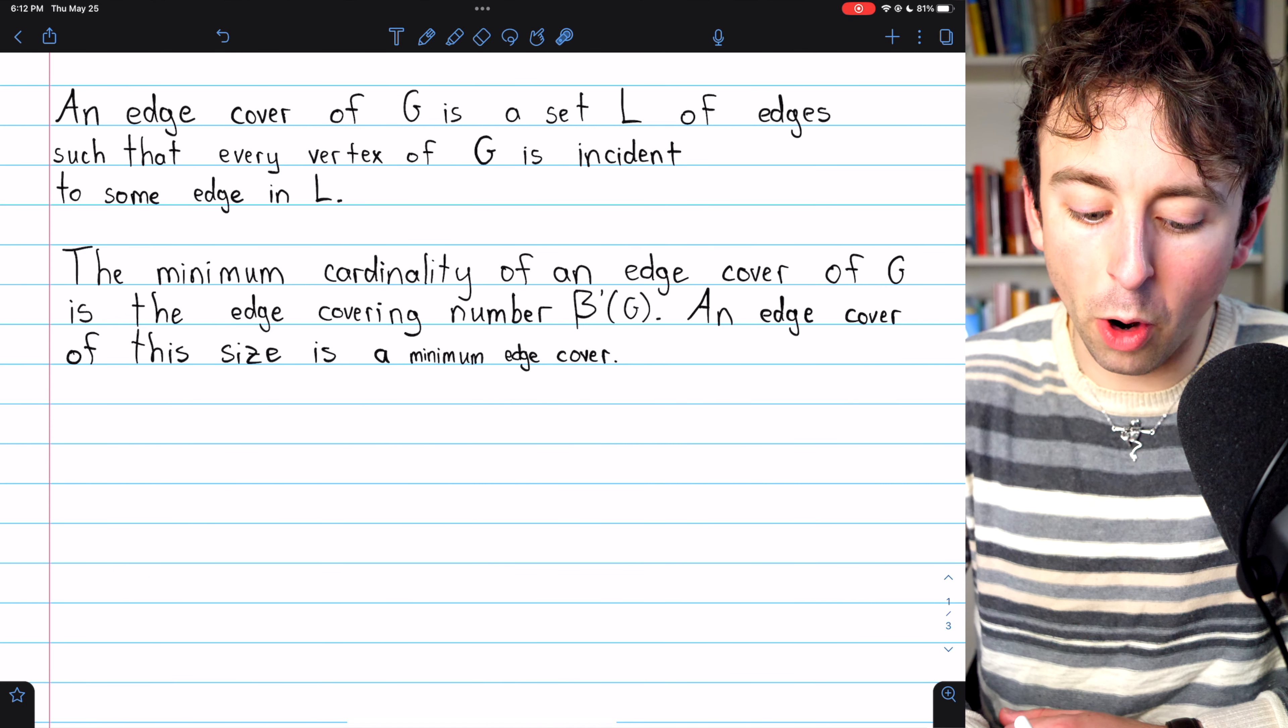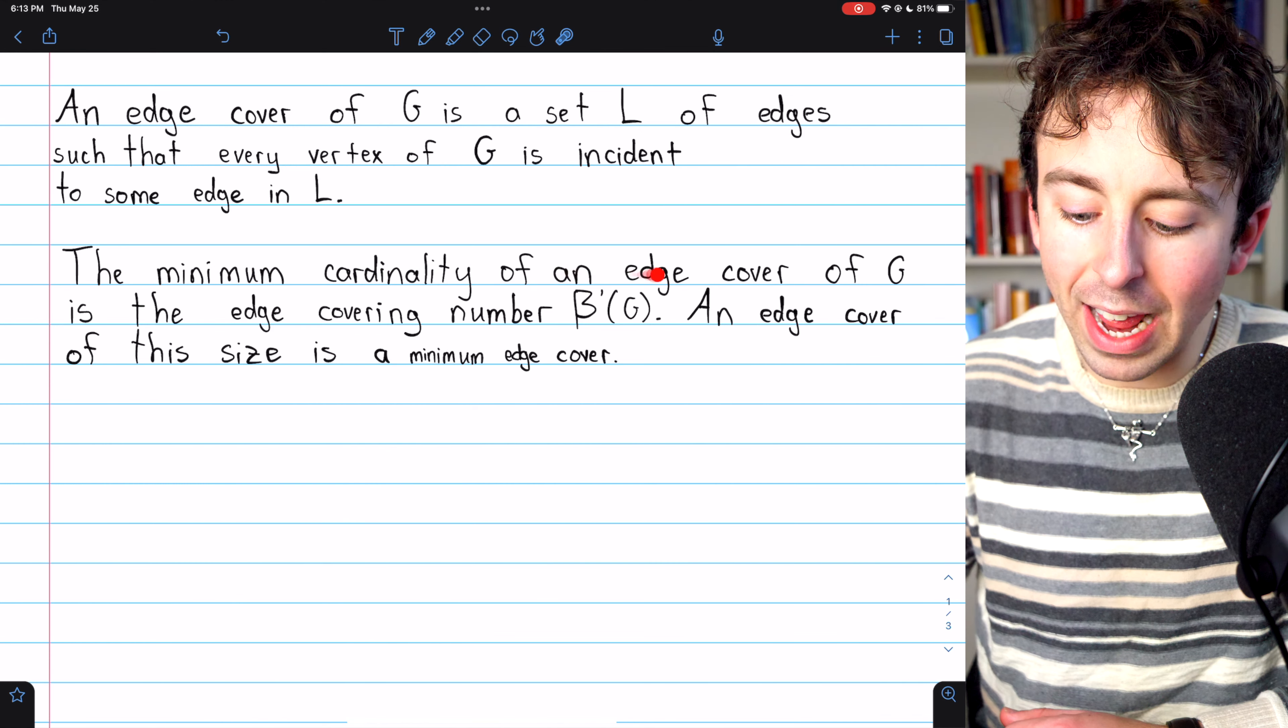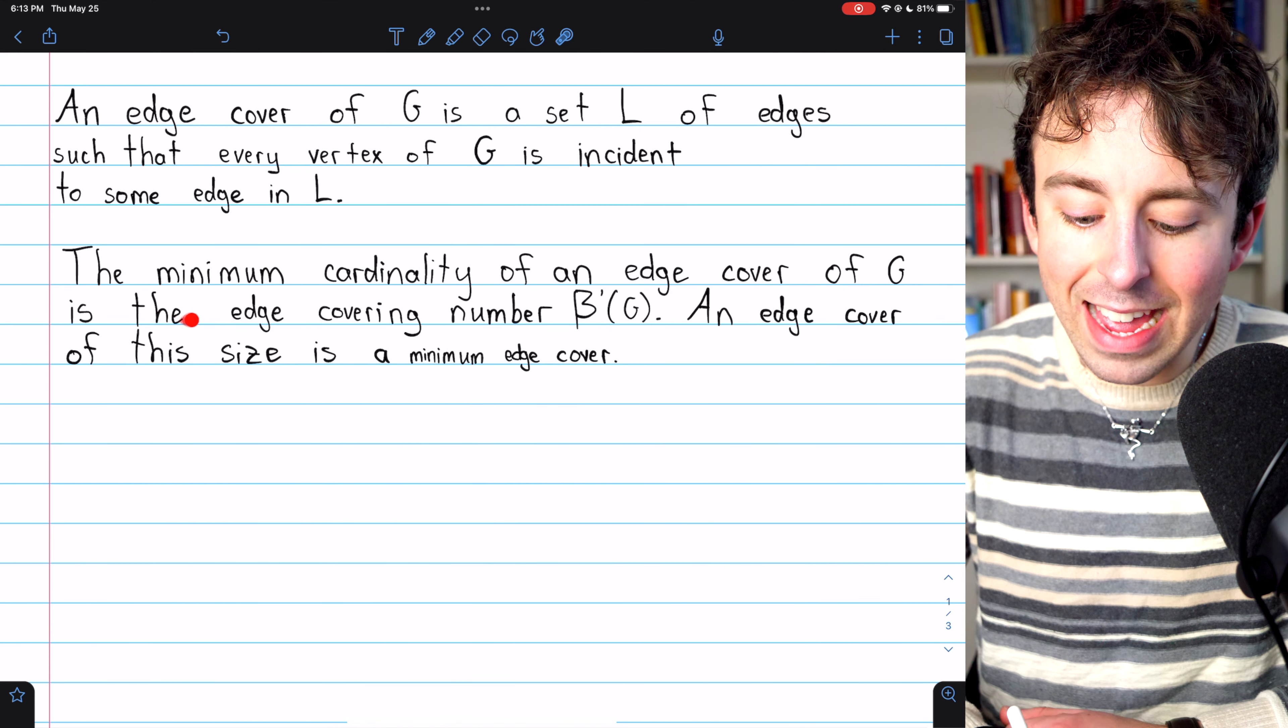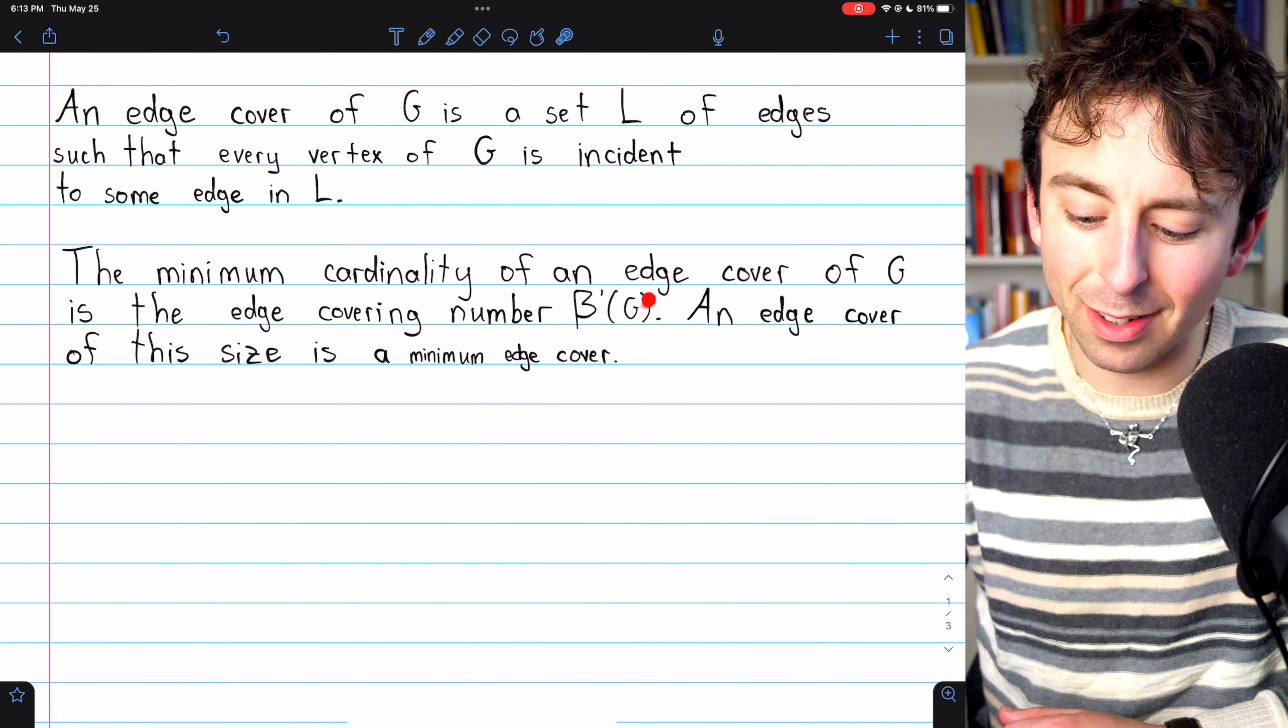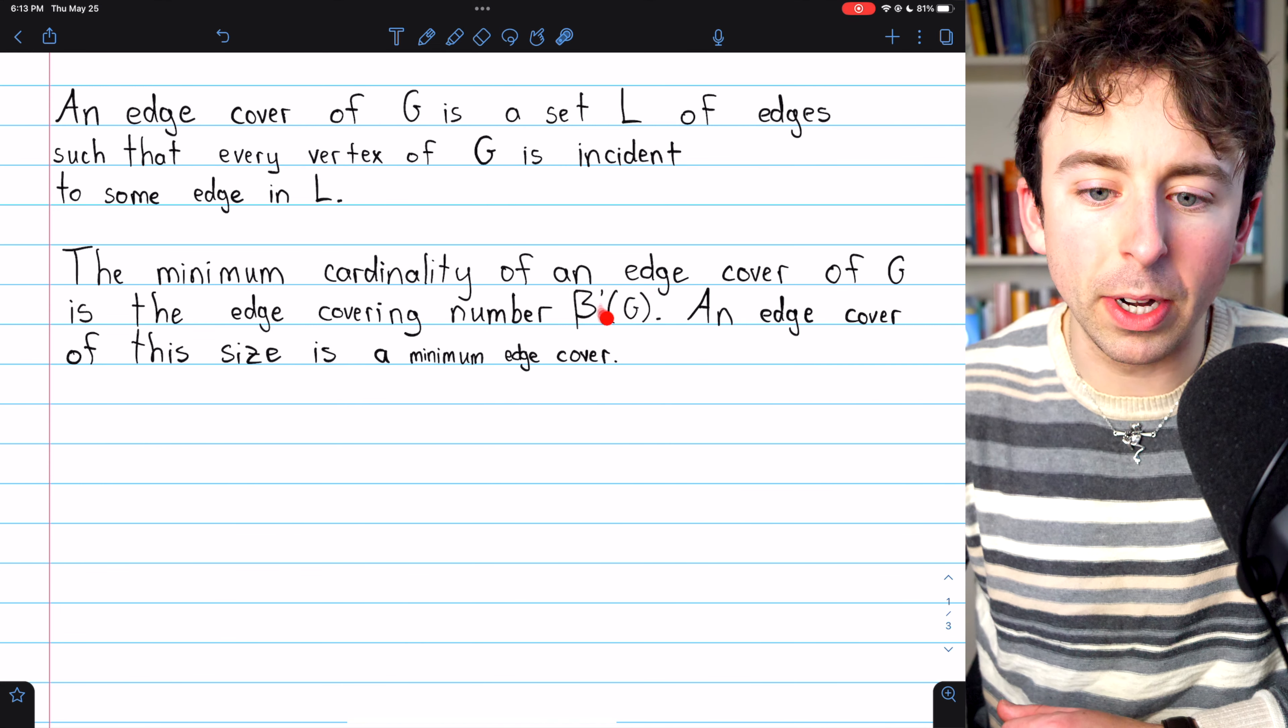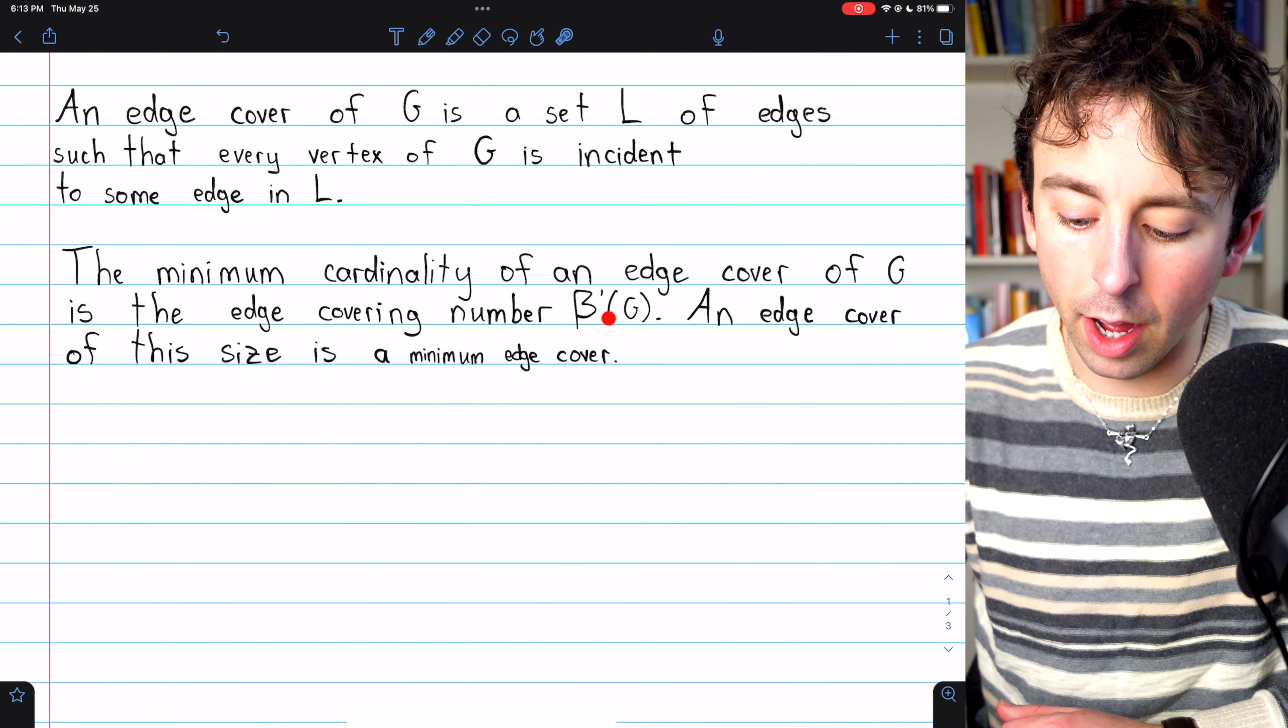Here's a little bit more vocab. The minimum cardinality of an edge cover of G is the edge covering number of the graph, and it's denoted sometimes like this. Not always, but this is pretty common notation, beta prime of G.